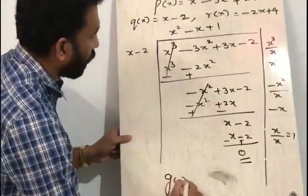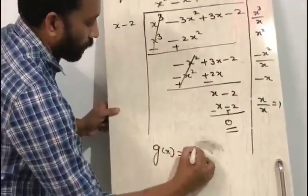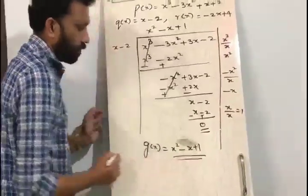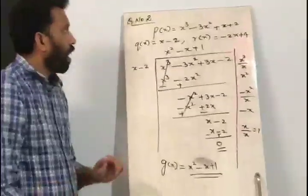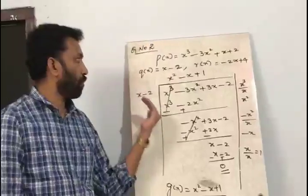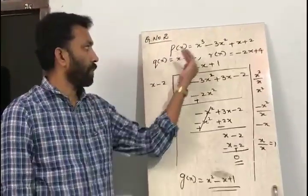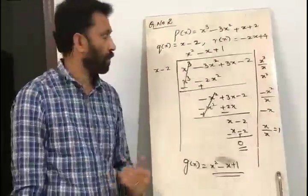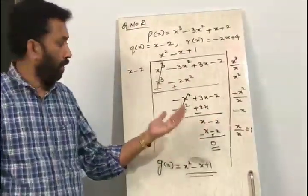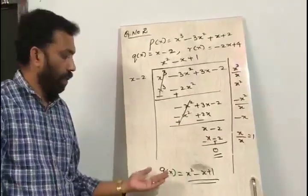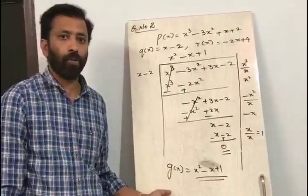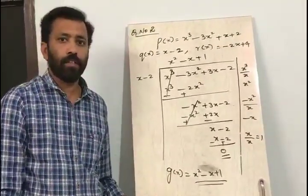So g of x is equal to x squared minus x plus 1. That means out of the four polynomials — p of x, g of x, q of x, and r of x — if three polynomials are given, then we can easily find out the fourth polynomial. Thank you.